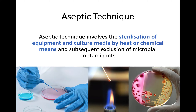You sterilise all your equipment by either heat or chemical means. Chemical means is essentially just cleaning and making sure everything is sterile. Heat means, for example, the picture in the middle here shows an inoculation loop being used to spread a sample onto the culture media — if you heat that to red hot, the heat also sterilises anything that may have been growing there.